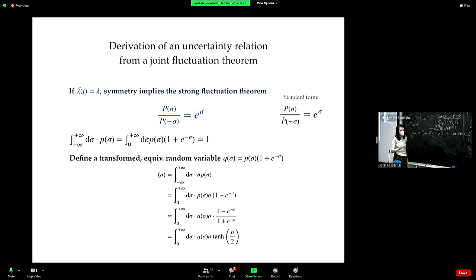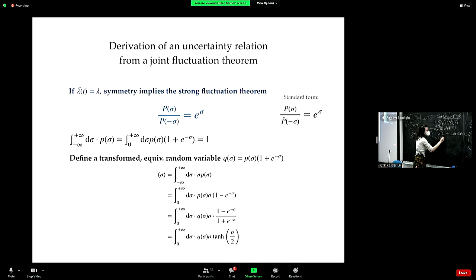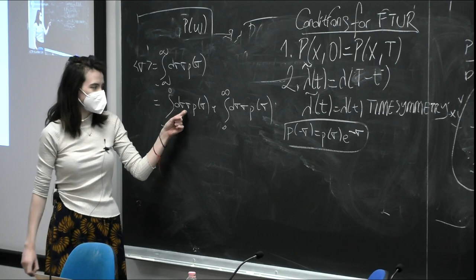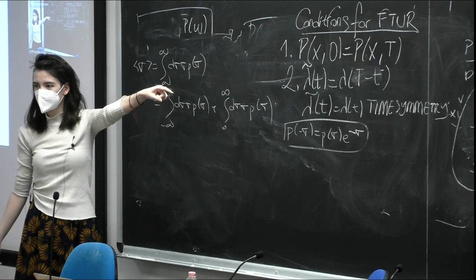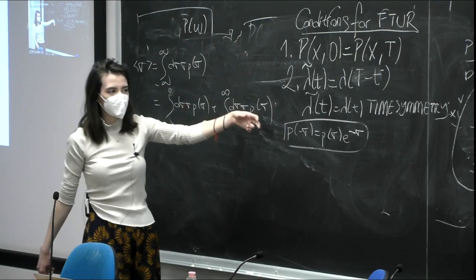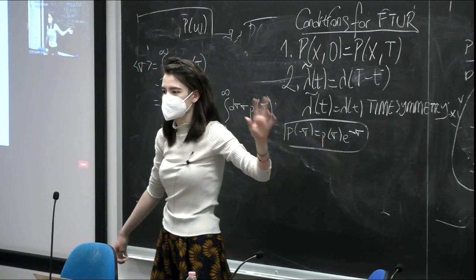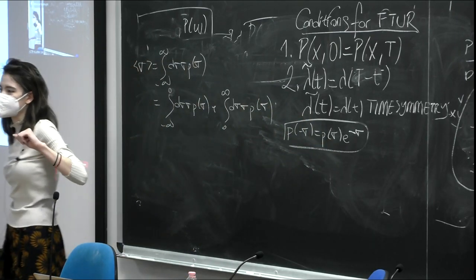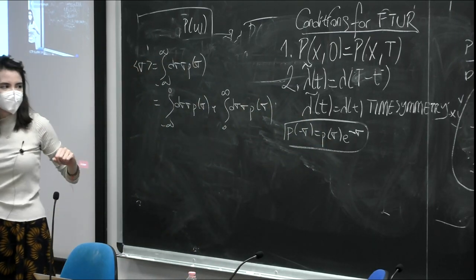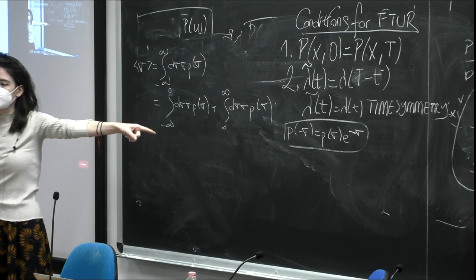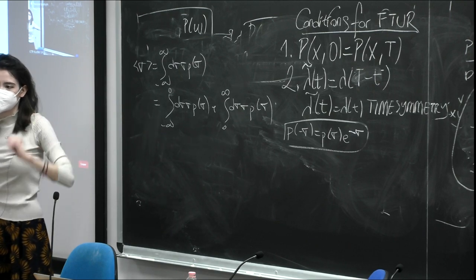Now there is one thing I want to ask you. When we didn't have the sigma term over here, we didn't have to account for the minus signs that would follow from the fact that we're considering the random variable taking values from minus infinity to zero.